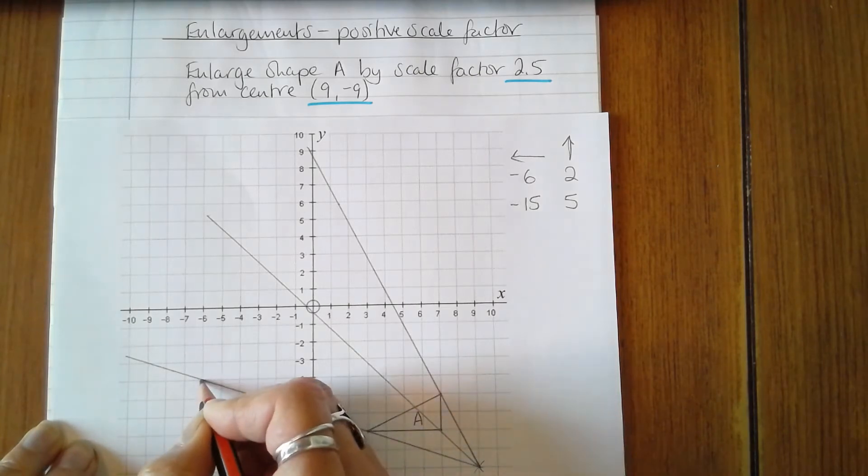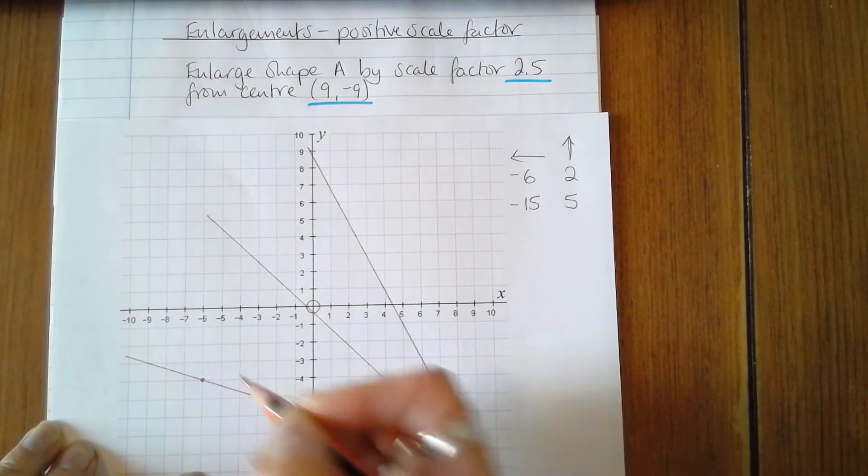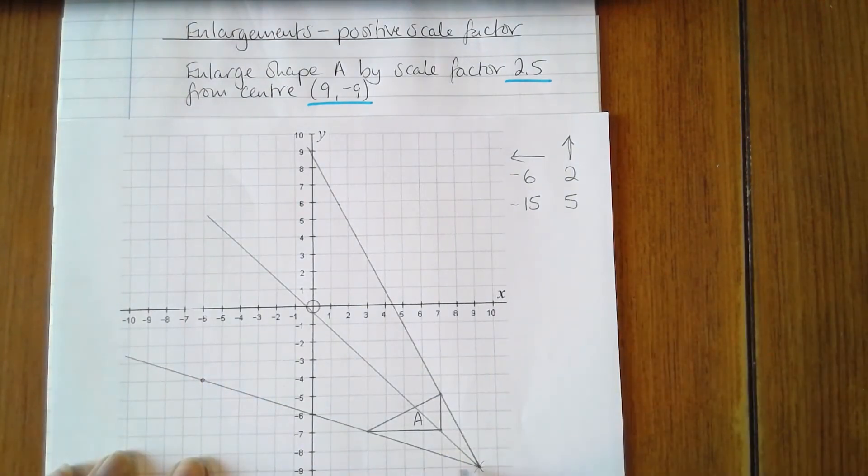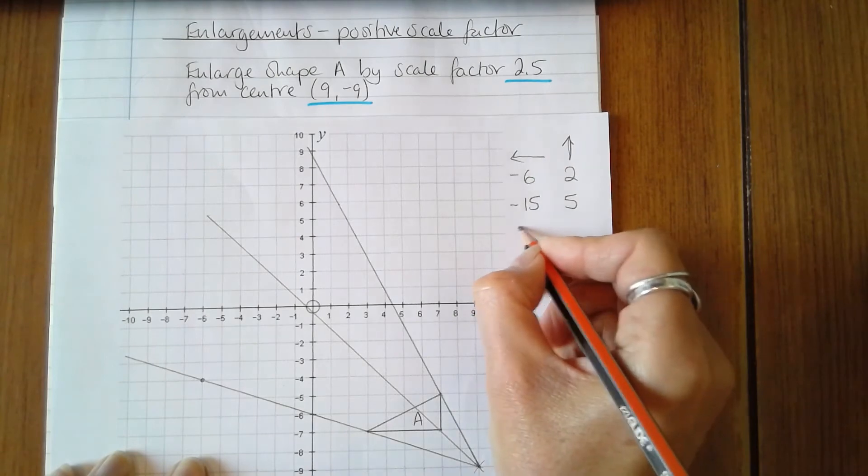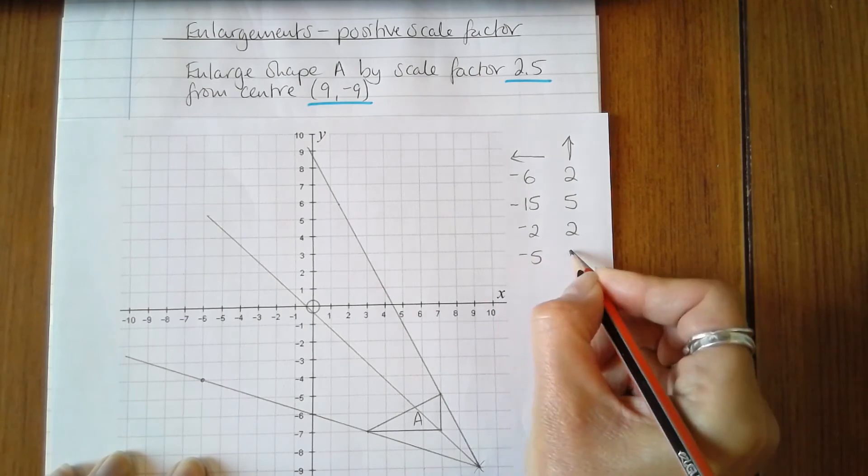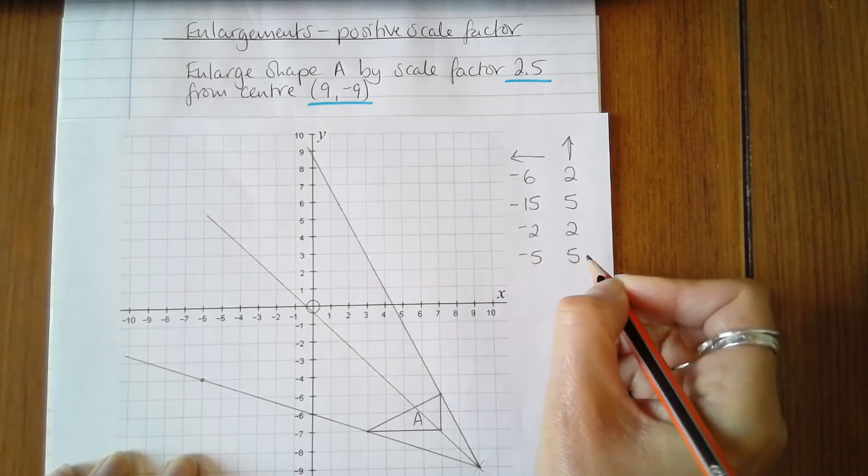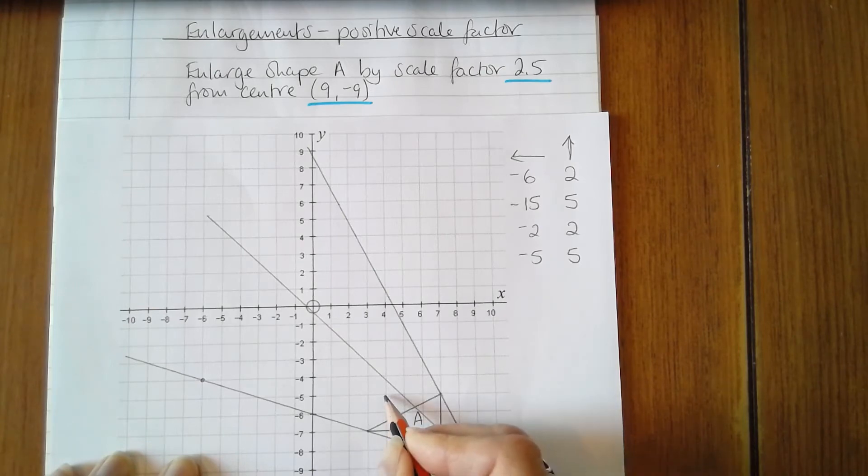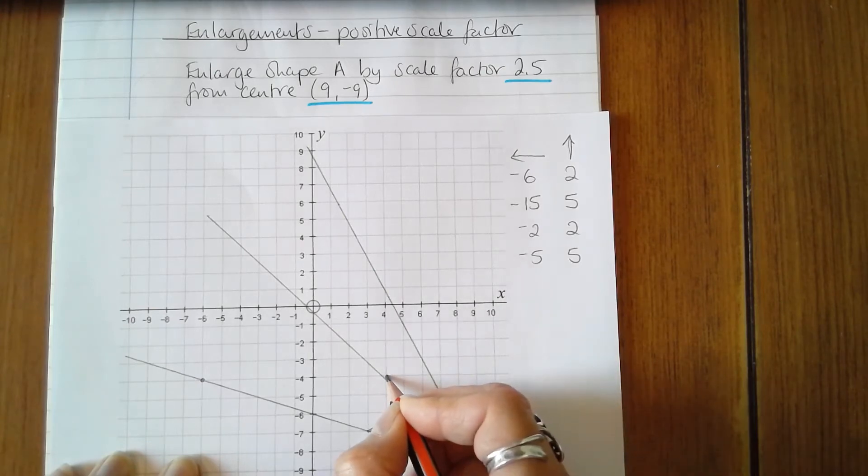This vertex here is 2 across and 2 up, so 2 to the left and 2 up. Multiply those by 2.5: -5 and 5. So 5 to the left and 5 up: 1, 2, 3, 4, 5, and 1, 2, 3, 4, 5 - very close to the grid line.